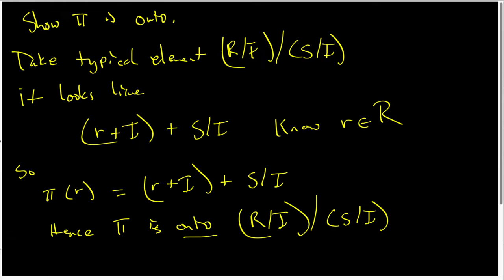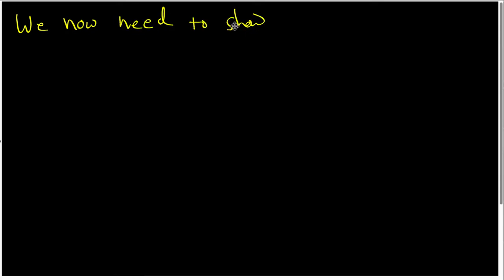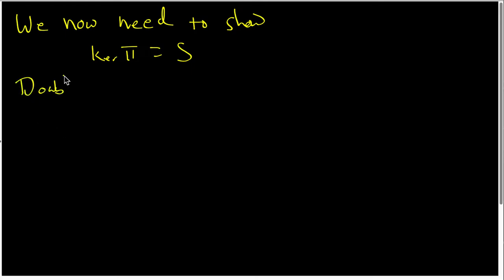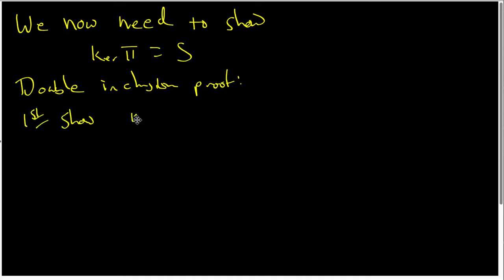The final piece of the proof is to find the kernel of π. We now need to show that the kernel of π is actually equal to the ideal S. This is going to require a couple of things from a couple of videos ago, and I'll try and remind you of them as we look at them. We will do a double inclusion proof. What that means is that we will first of all show that the kernel of π is indeed a subset of S.